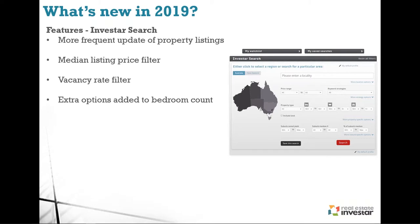We've added extra options to the bedroom count filter, up to 50 bedrooms. This came from requests from people looking at boarding houses or rooming houses — perhaps existing dwellings with a minimum of 15 or 20 bedrooms. Before, the max was just 10, which made it difficult if you were looking for much bigger properties.